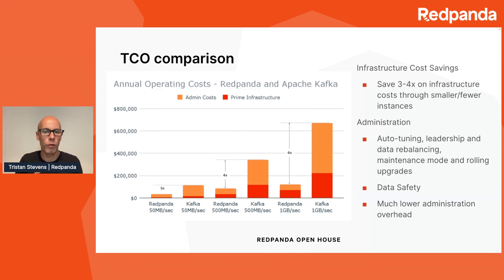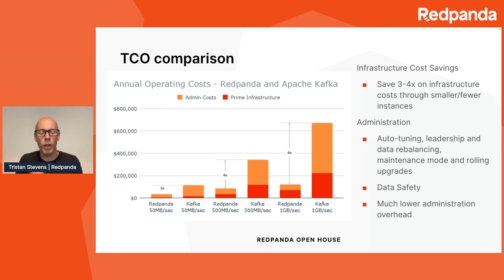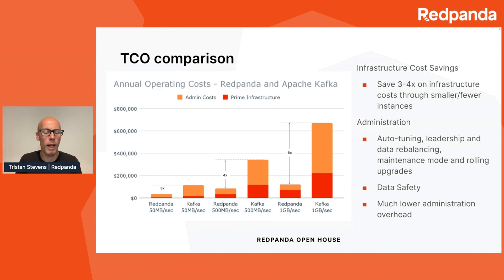Our customers also tell us that running Redpanda is much simpler than running Apache Kafka. We see these massive teams looking after Apache Kafka clusters. Redpanda has features for auto-tuning, leadership and data rebalancing, maintenance mode, and rolling upgrades. We don't need to worry about ZooKeeper, which has a tendency to just exit the building when it feels like it. Redpanda also has much better data safety — because of Raft consensus groups, we don't have the possibility of partitions falling in and out of the ISR set, or losing data through unsafe leader election. All of that means you need fewer people to look after your Redpanda cluster, and for the large workload we're looking at up to six times more cost effective to run Redpanda than Apache Kafka.